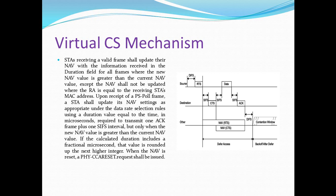Now let's see how the virtual CS mechanism works. In case of RTS/CTS networks, stations receiving a valid frame shall update their NAV with the information received in the duration field for all frames where the new value is greater than the current NAV value, except the NAV shall not be updated where the receiver address is equal to the receiving station's MAC address.